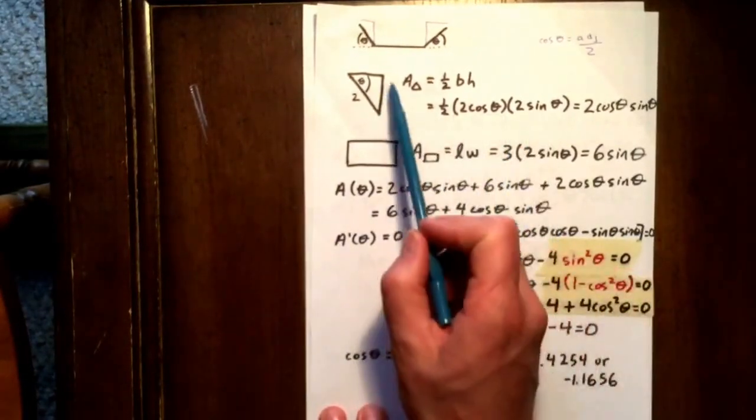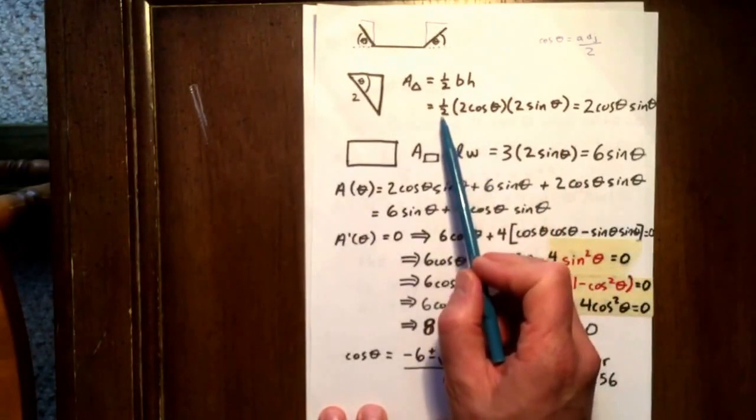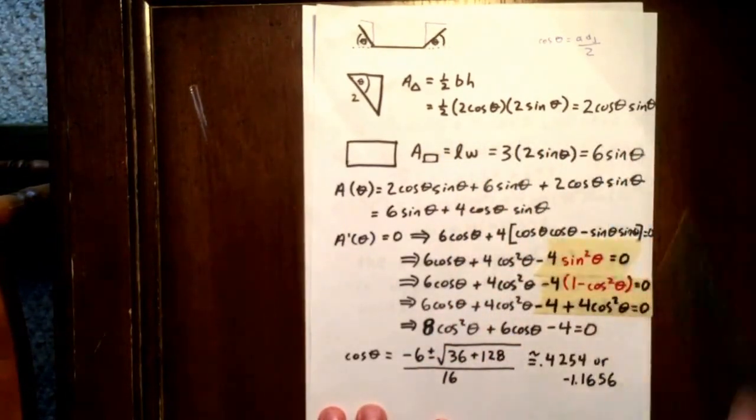Similarly, we see that this side here is 2 sine theta. So the area of each triangle is 1/2 times 2 cos theta times 2 sine theta, which is 2 cos theta sine theta.